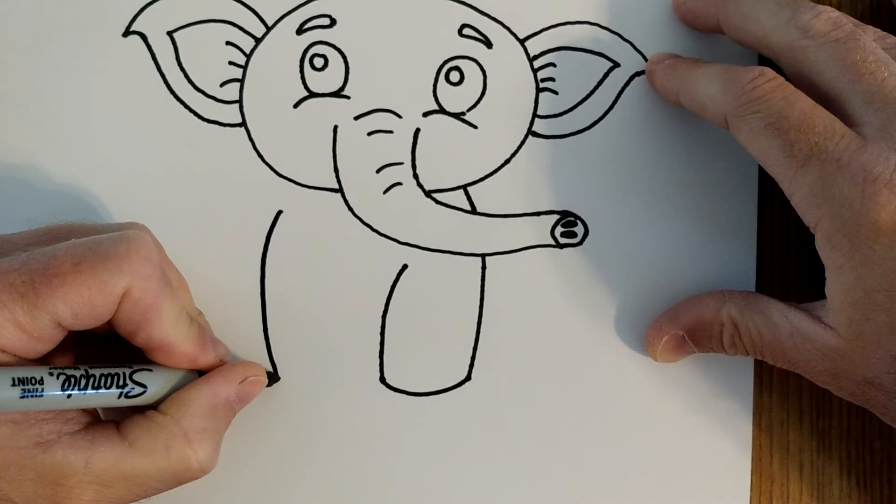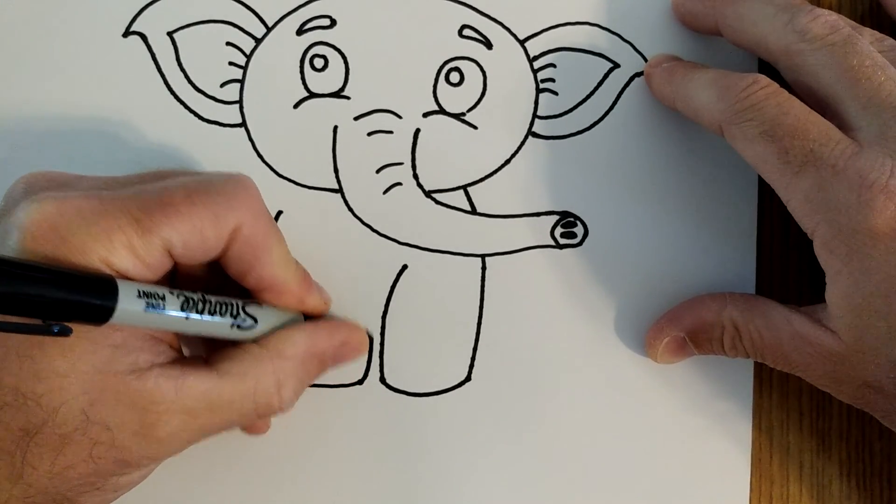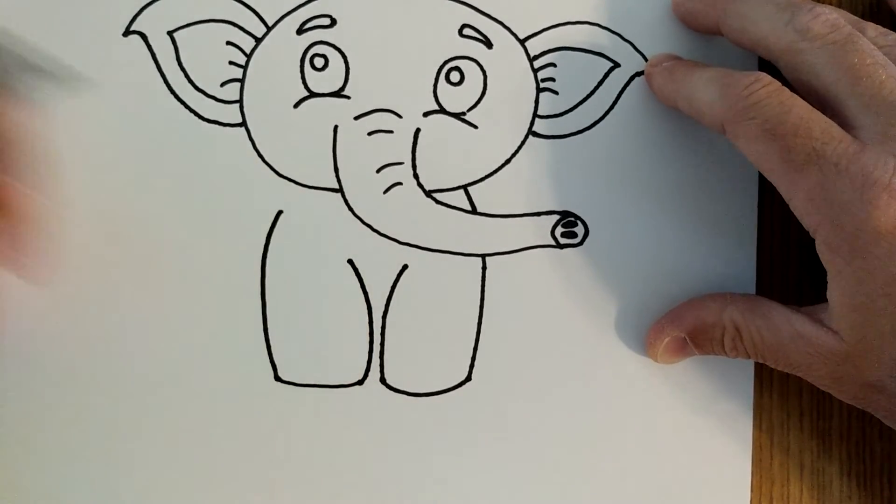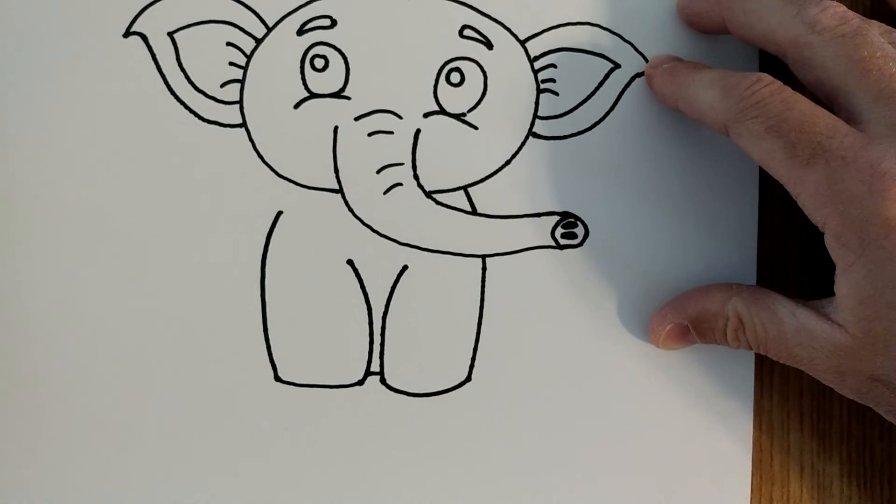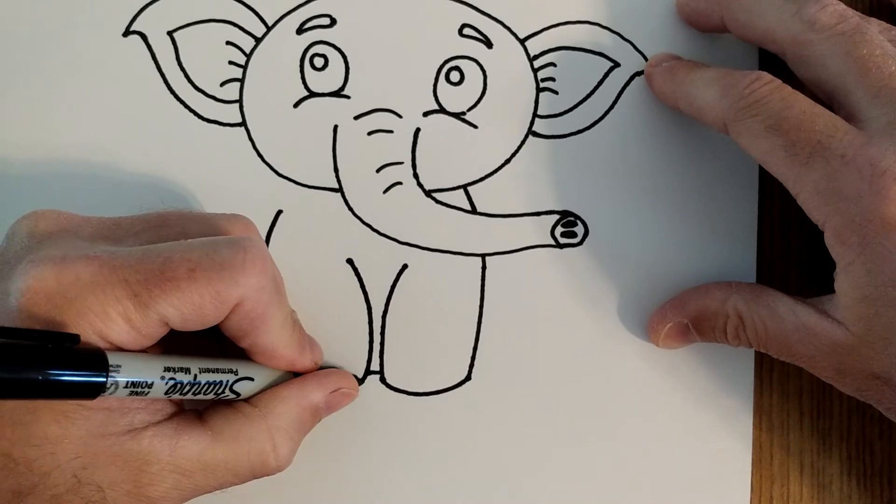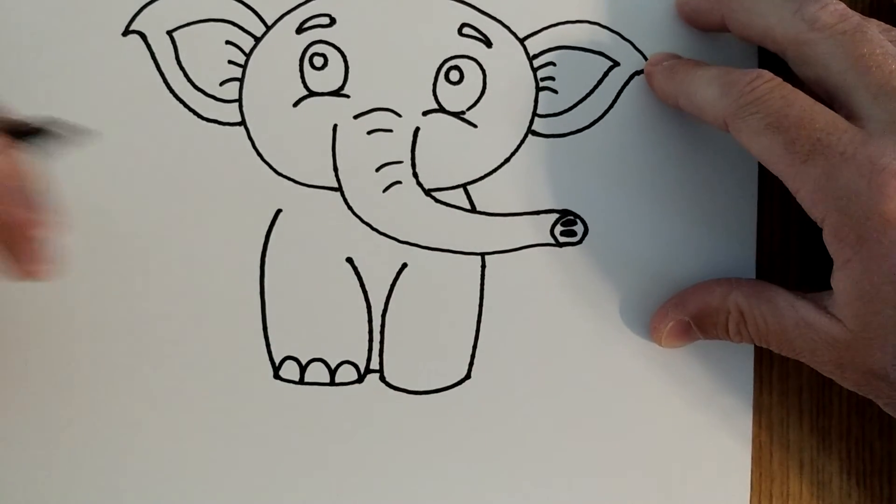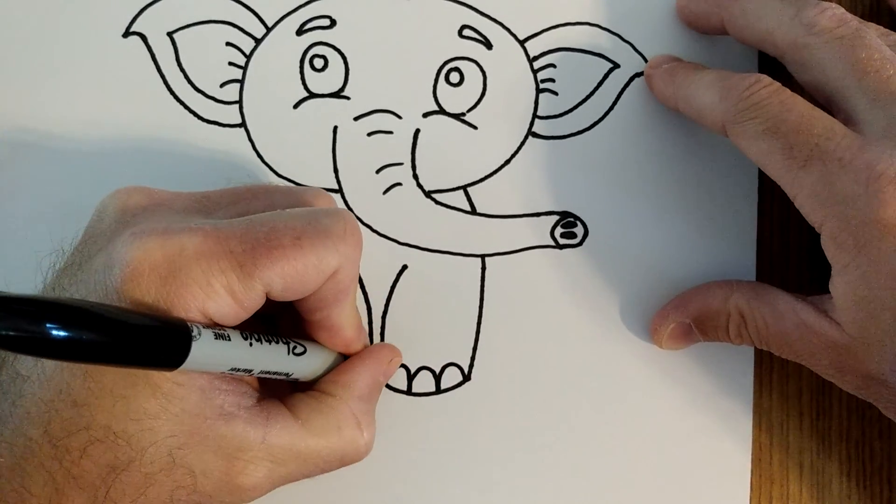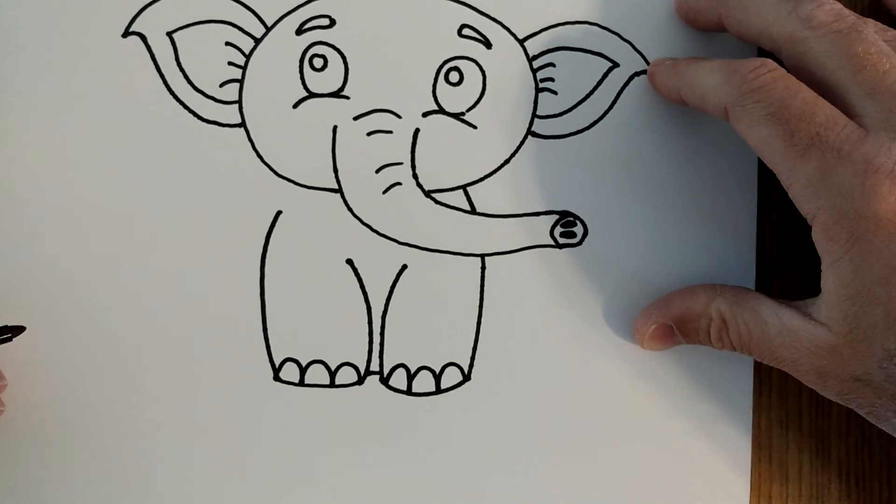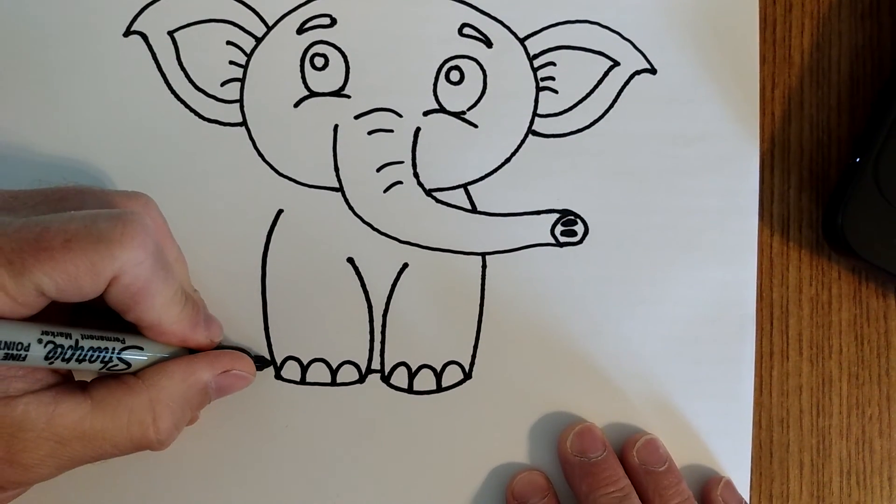Curve down, curve it back up, and you can put a little line there to connect it. I'm going to do one, two, three bumps on each foot like that. And he's going to be sitting down, so this leg is gonna come out.